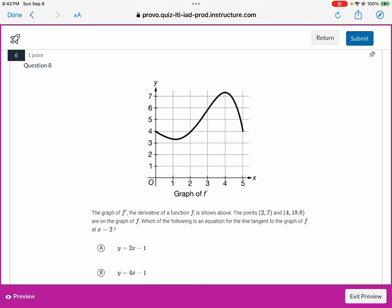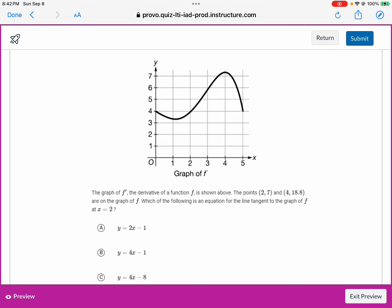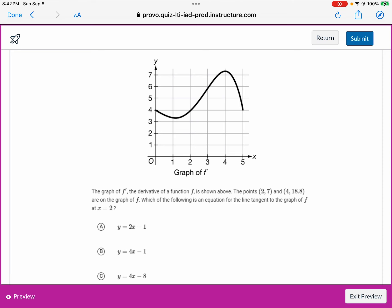The graph of f prime, the derivative of the function f is shown above. The points (2, 7) and (4, 18.8) are on the graph of f. Which of the following is an equation of the line tangent to the graph of f at x equals 2? So just note that the picture given to us is that of the graph of f prime, not that of f. But what we do have is two points. We should only need one of these points, though.